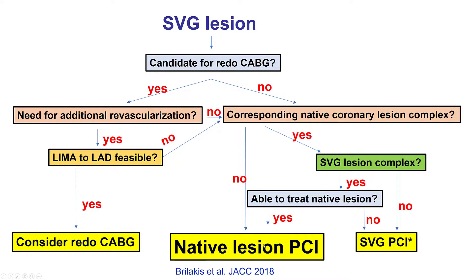We know that when patients present with saphenous vein graft lesions, sometimes opening the corresponding native lesions can be advantageous, especially in terms of better long-term patency. But this can be sometimes complex. In this particular case, we had a complex native and complex SVG lesion, and the question comes down to whether we are able to treat the native lesion or not.